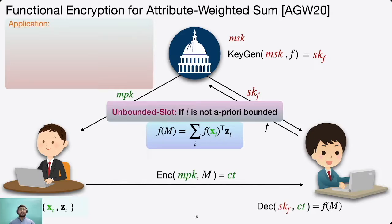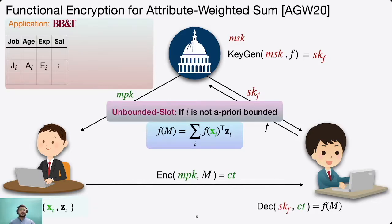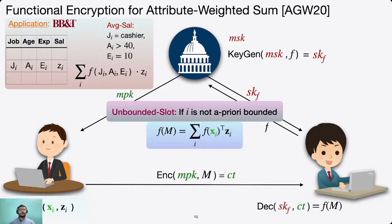There are interesting applications of this functionality. In a banking sector, all employees are divided into categories: job j_i, age a_i, experience e_i, and salary g_i. Suppose we want to compute the average salary of cashiers over age 40 with 10 years of experience. Using attribute-weighted sum functionality, we calculate the summation over i of f(j_i, a_i, e_i) times z_i, where x_i = (j_i, a_i, e_i) is the public part and g_i (salary) is the secret part of the message.